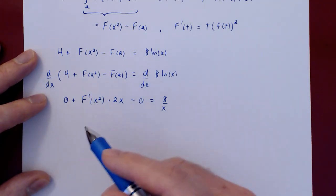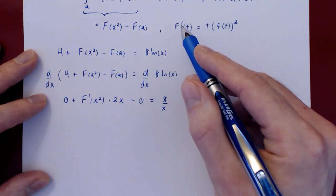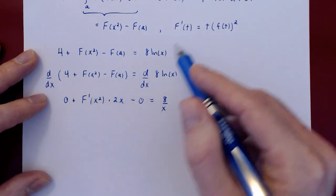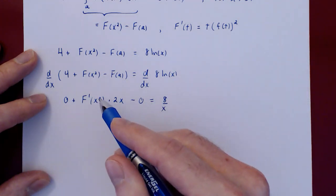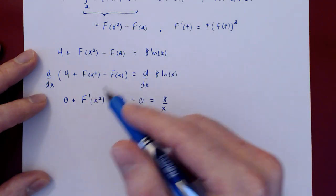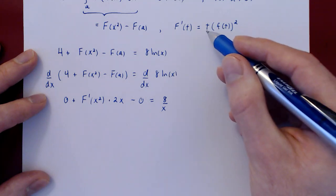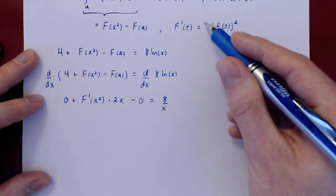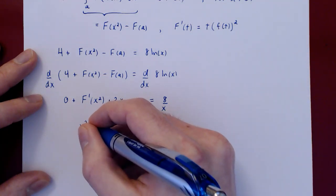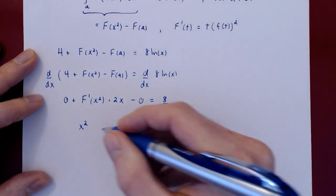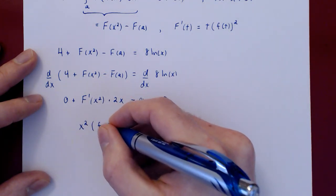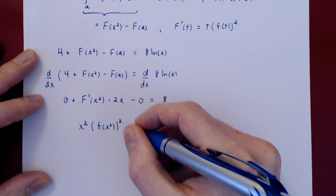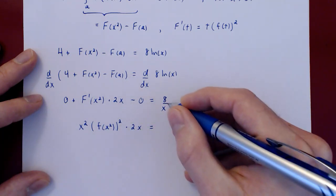We don't know what uppercase F is, but we sure know what uppercase F prime is — it is the square of f of t. We can now replace: this is true for all values of t. We are simply evaluating F prime instead of at t, at x squared. So let's replace t by x squared. On the left, we will get x squared: F prime of x squared, times 2x, is equal to 8 over x.